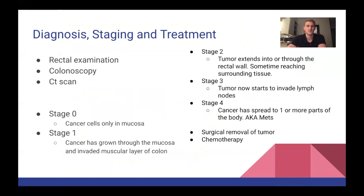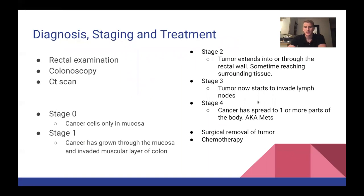Diagnosis is through rectal examination, colonoscopy, or CT scan. There are five stages: stage zero — cancer cells are only in the mucosa; stage one — cancer has grown through the mucosa and invaded the muscular layer; stage two — tumor extends into or through the rectal wall, sometimes reaching surrounding tissue; stage three — it reaches the lymph nodes; stage four — it metastasizes and spreads to other body parts like the small intestine. The main treatment is surgical removal of the tumor before metastasis, taking advantage of the 10 to 15 years of slow growth. Chemotherapy is also used.